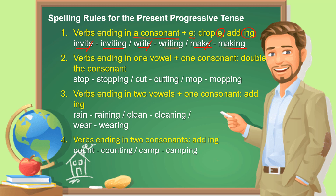Rule 2: verbs ending in one vowel and one consonant — double the consonant and add -ing. Stop: one vowel, one consonant → stopping. Cut → cutting.